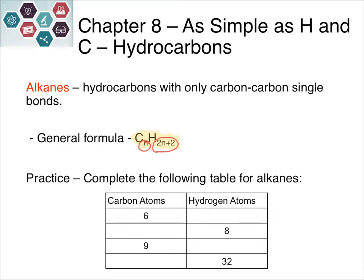Here are a couple of examples. If we have 6 carbon atoms, we do 2 times 6 plus 2 to get 14 hydrogen atoms. We can also reverse this: if we know there are 8 hydrogen atoms, then 8 equals 2n plus 2, so solving for n gives us 3 carbon atoms. Go ahead and pause the video and try the last two on your own.